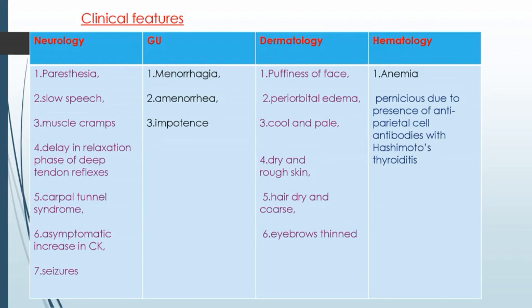Dermatological features include puffiness of face, periorbital edema, cool and pale skin, dry and rough skin, dry and coarse hair, and thinning of eyebrows. Hematological features include pernicious anemia due to the presence of anti-parietal cell antibodies associated with Hashimoto's thyroiditis.